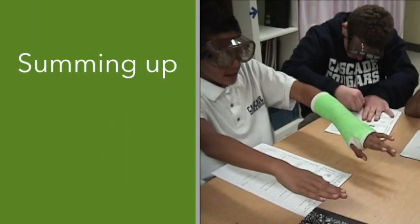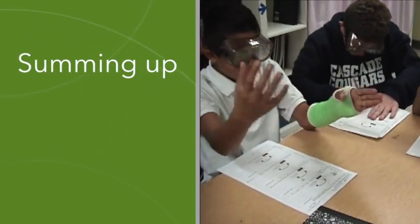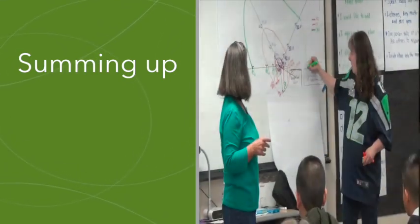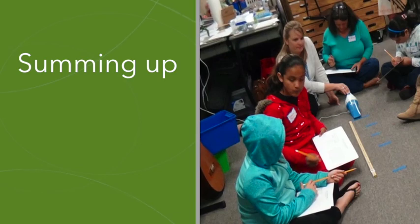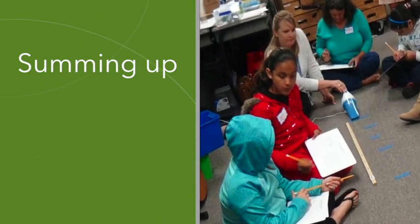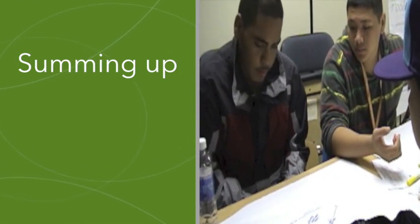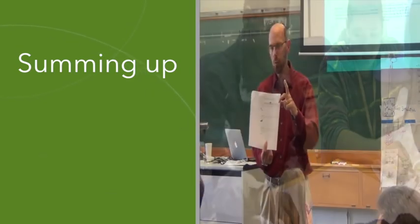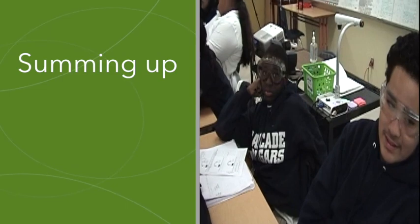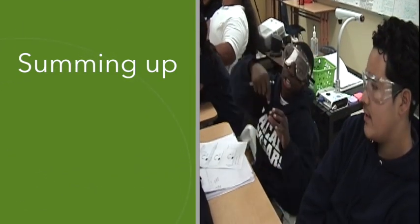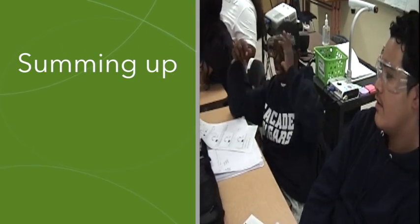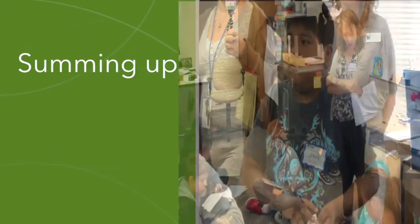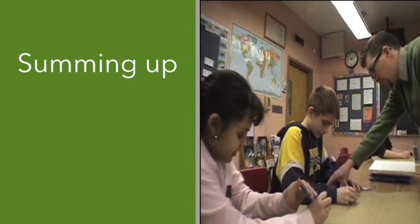The teaching practices we've shown here center around the scientific practices of modeling, explanation, and argument. Consider how rich in conceptual content this science work was for students. There was no separation between science activity and science ideas. Each supported the other. Consider, too, how each teacher supported students' attempts at ambitious learning by providing tools, scaffolding, explicit conversations about evidence and explanation, and opportunities to try out new ways of talking, doing, and being with each other. We leave this overview on this final note, a reminder that ambitious science teaching is flourishing because educators are experimenting with new practices and new tools that are aligned with a clear vision of rigorous and equitable instruction.